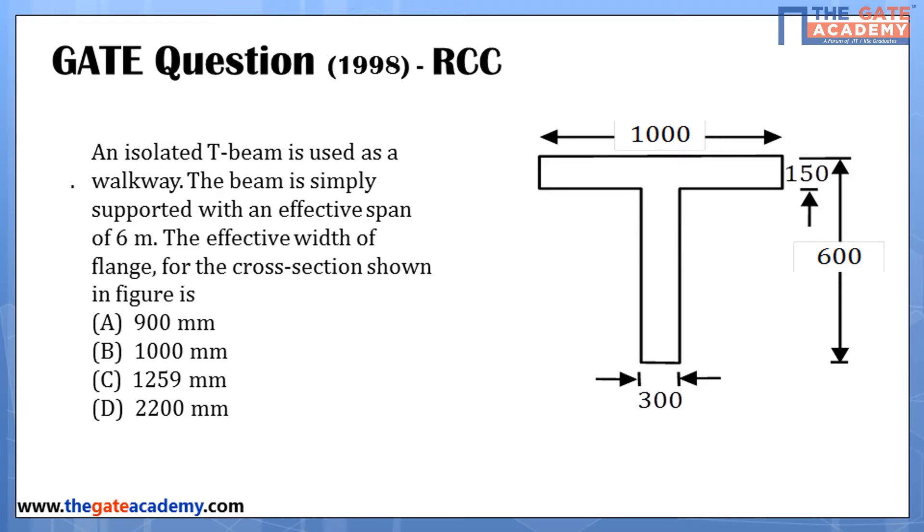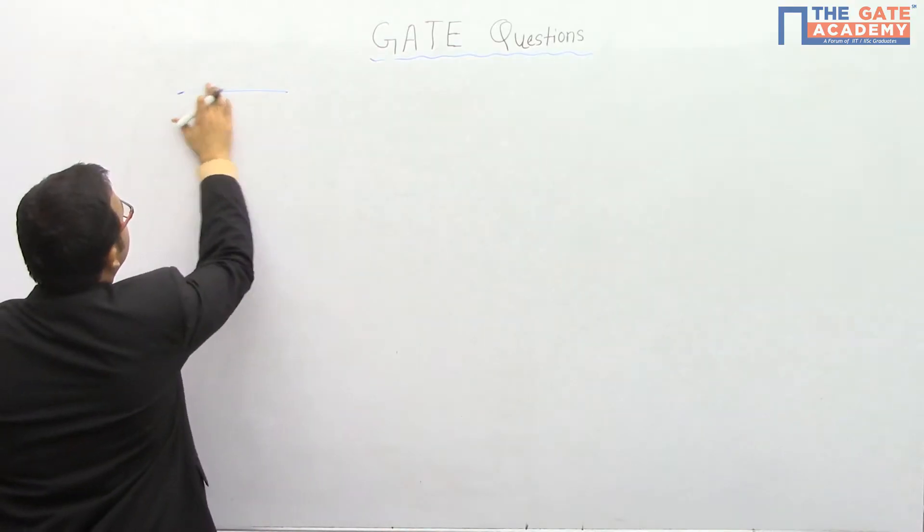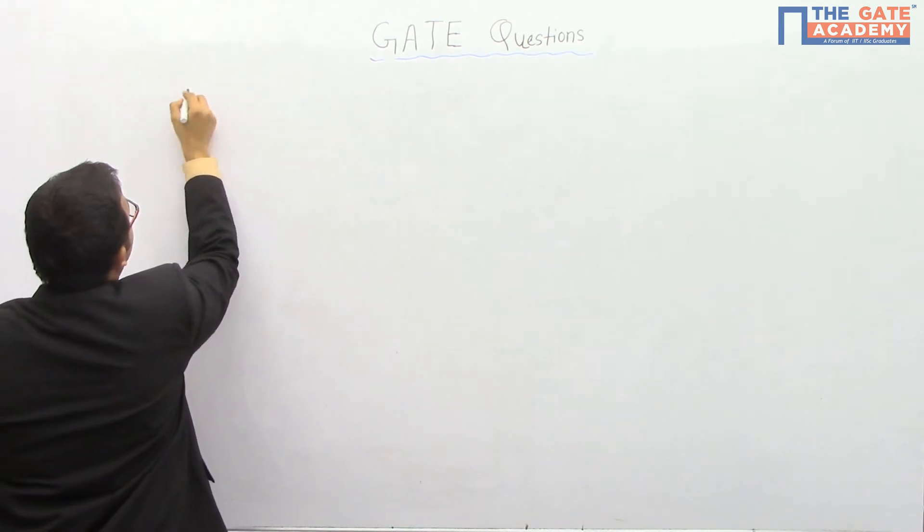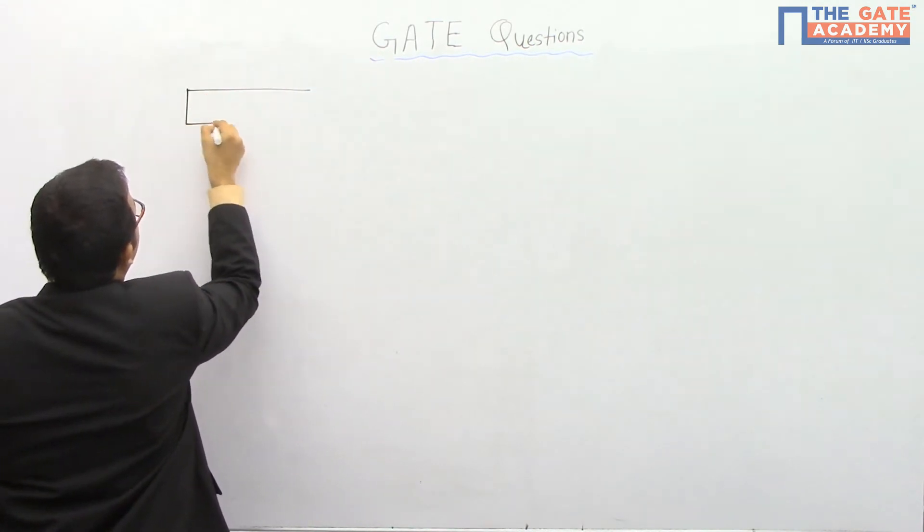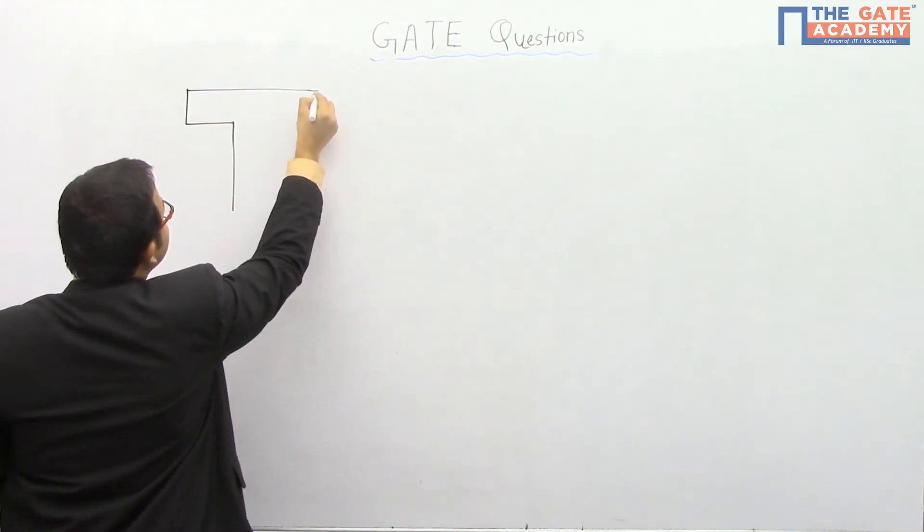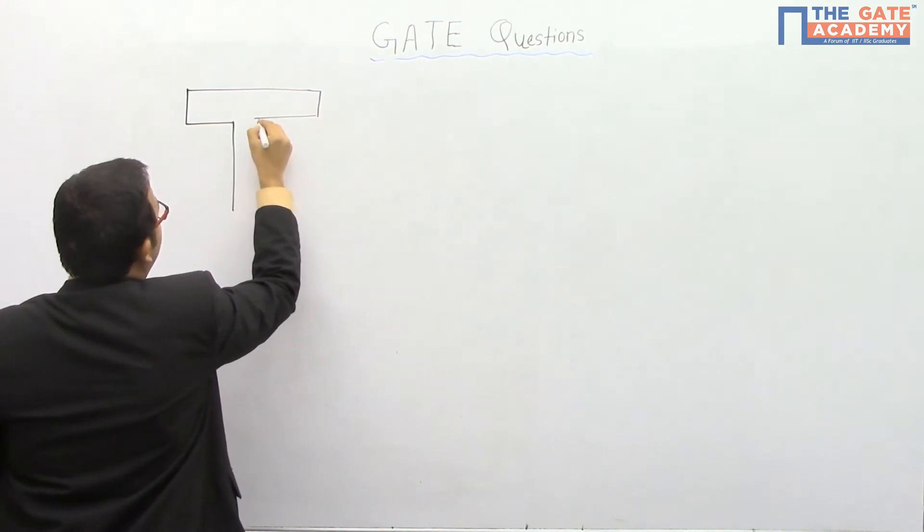Our options are given: 900 mm, 1000 mm, 1259 mm, and 2200 mm. Then the figure is given, one T section is given, which is used as a walkway.